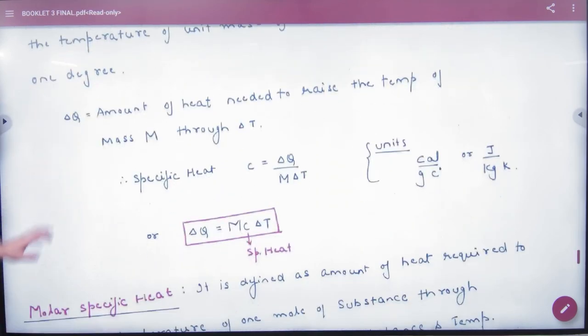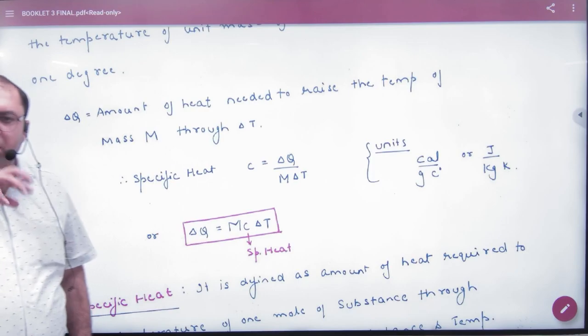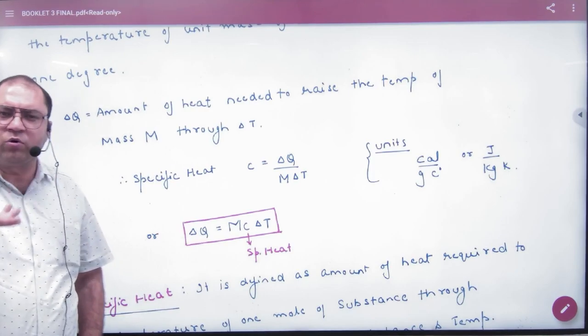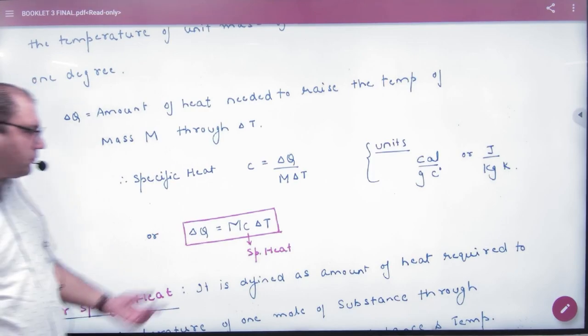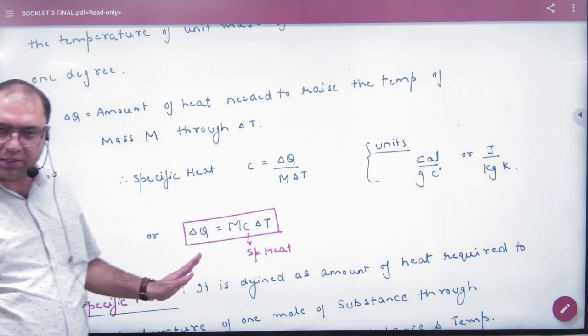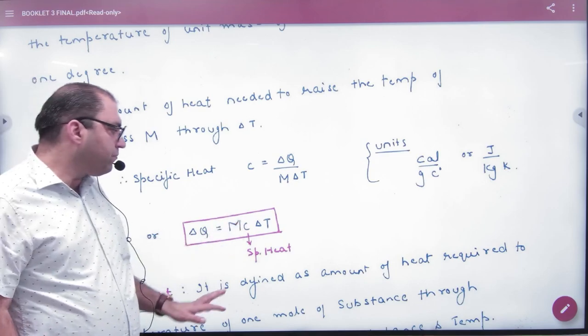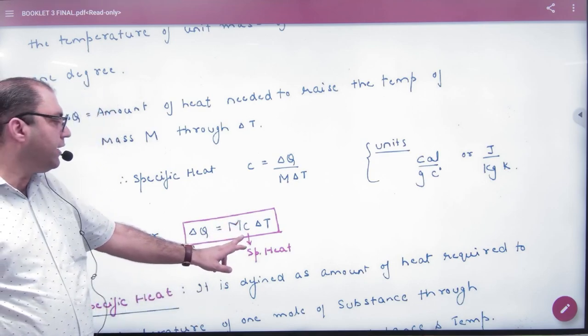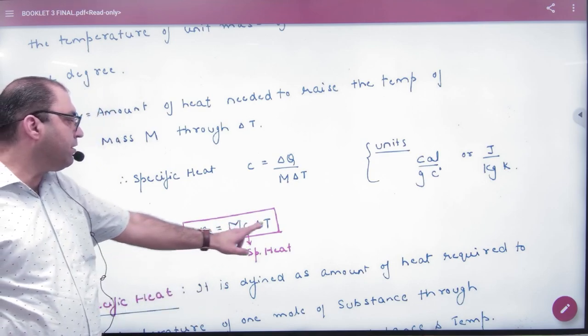So delta Q equals M C delta T. Cross multiply: specific heat C equals delta Q divided by M delta T.